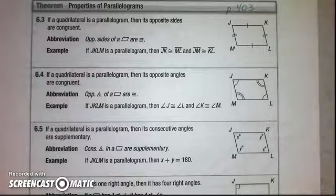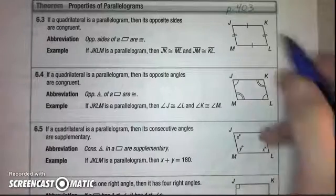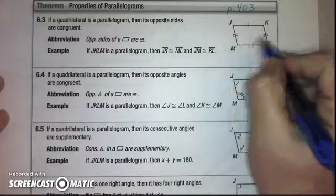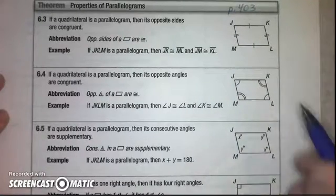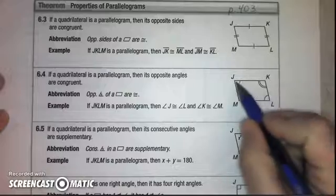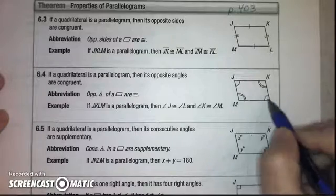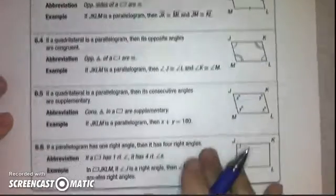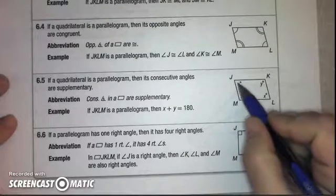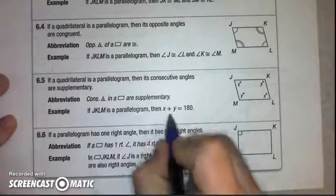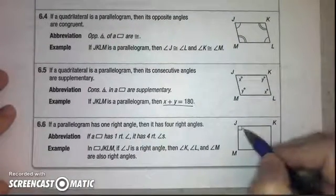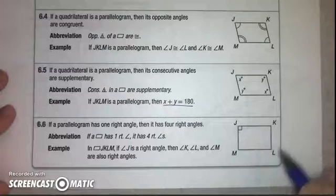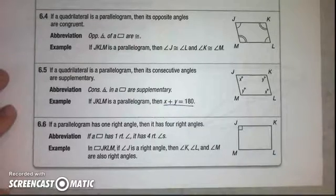Here are your main properties of parallelograms — that means all parallelograms have these qualities. In a parallelogram, opposite sides are congruent — the markings mean they're congruent. In a parallelogram, opposite angles are congruent. In a parallelogram, consecutive angles are supplementary. And in a parallelogram, if we have one right angle, the other three are also right, so all four are right angles as long as one is.